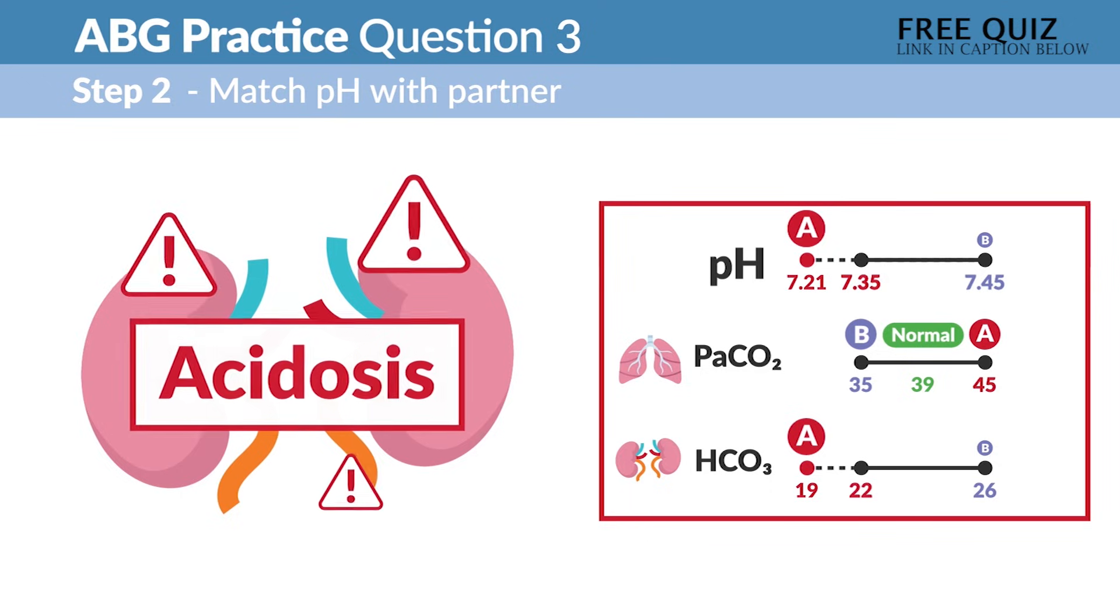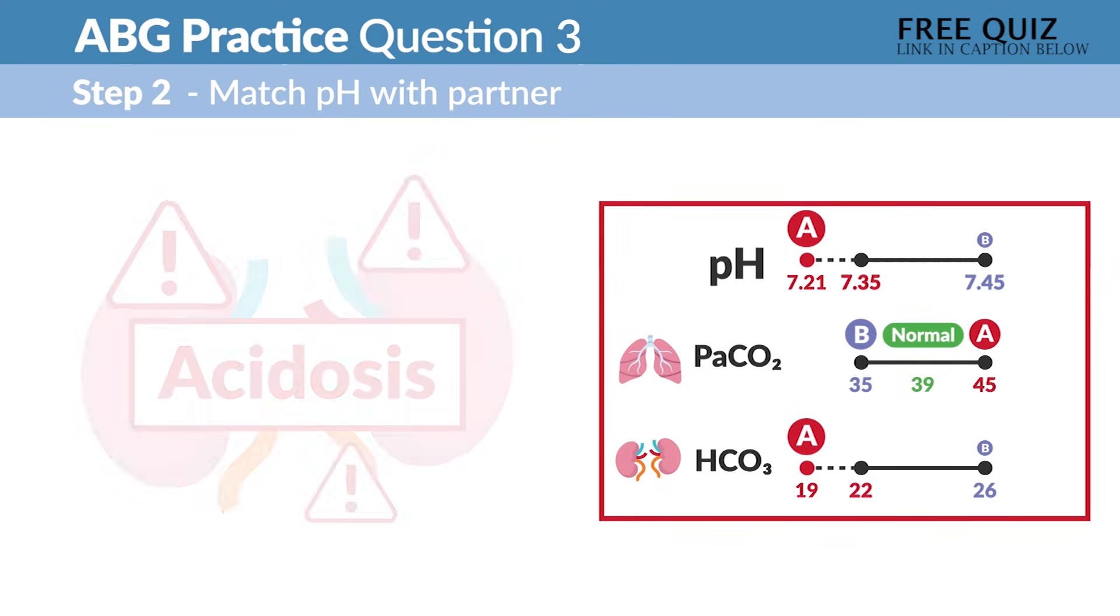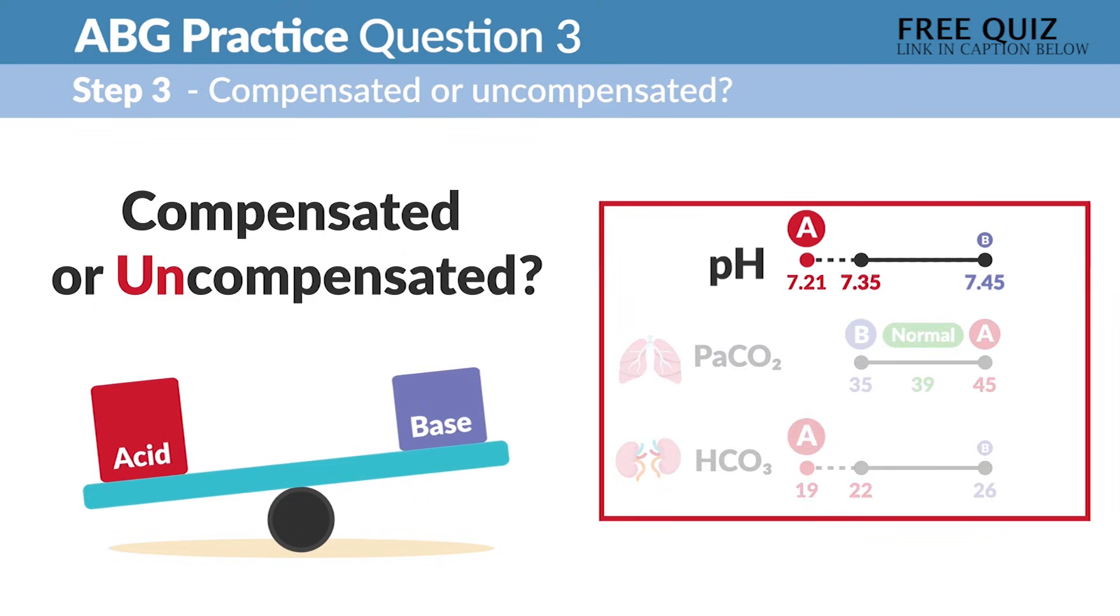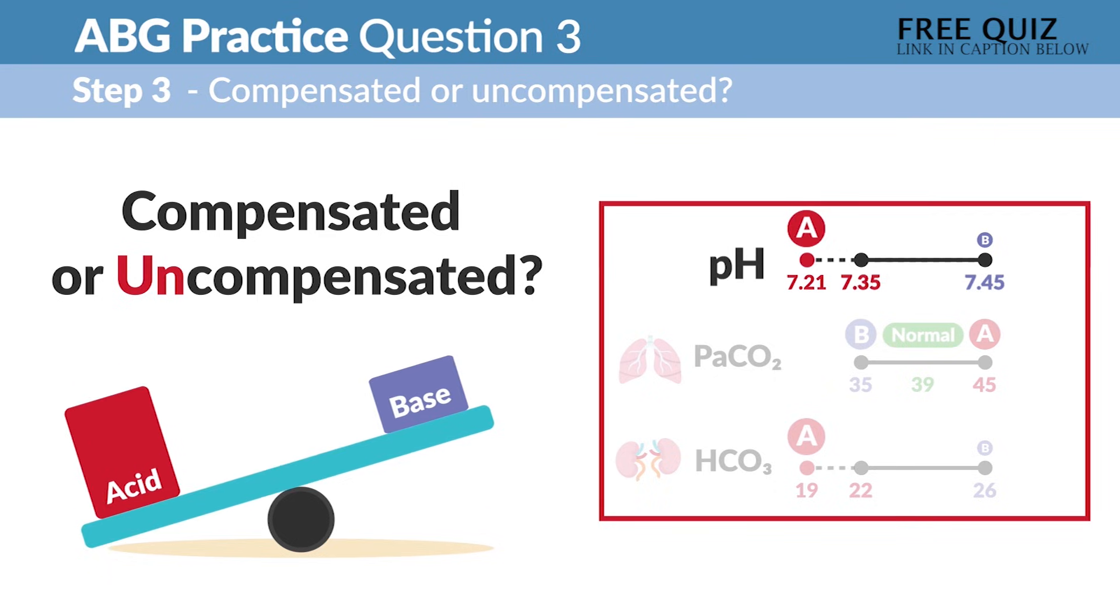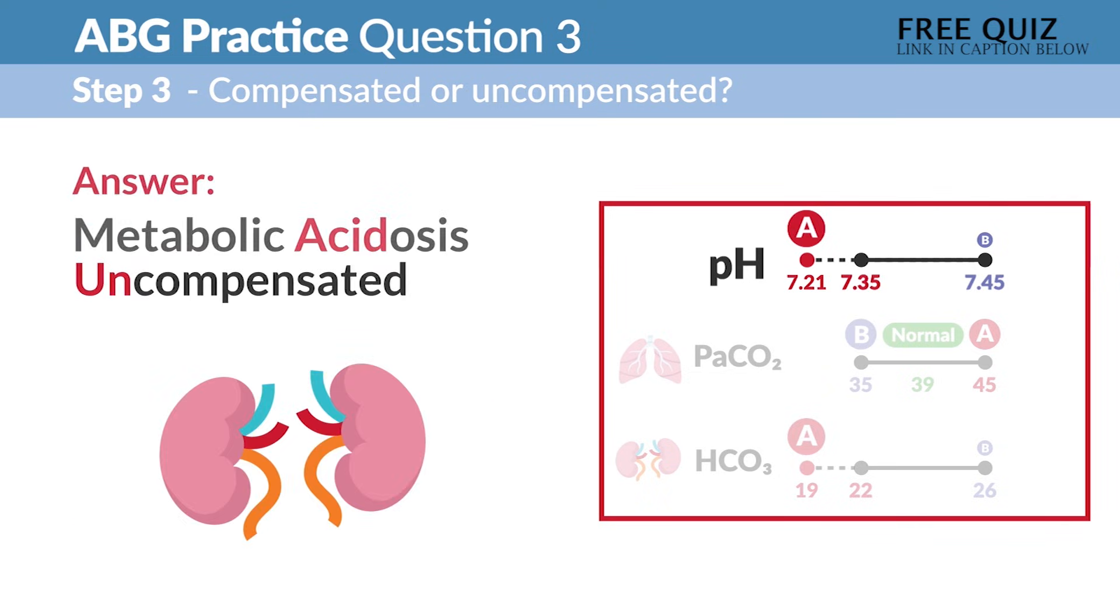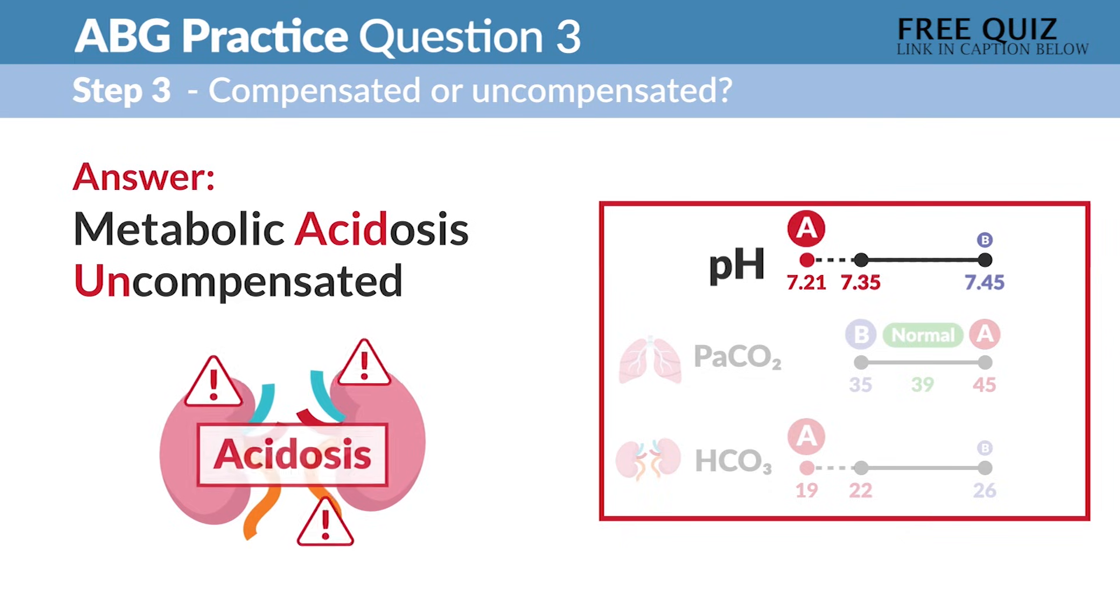So the kidney icon tells us it's metabolic acidosis. Now step three: is it compensated or uncompensated? So look at the pH, is it normal? So it's not in normal range, so it's not in balance. It didn't find that common ground, so it's not compensated, so it's uncompensated. The answer here is metabolic acidosis that is uncompensated.